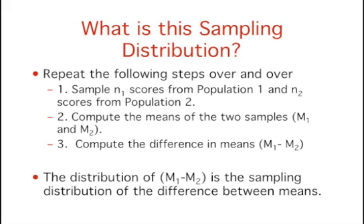First, sample n1 scores from population 1 and n2 scores from population 2. Second, compute the means of the two samples, m1 and m2. And third, compute the difference between means, that is, m1 minus m2. The distribution of the differences between means is the sampling distribution of the difference between means.